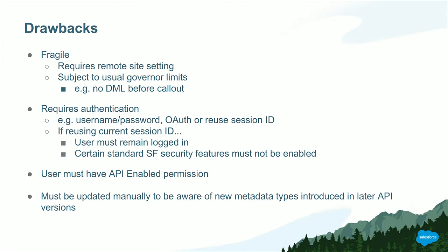For example, a user must remain logged in during any asynchronous processing. Some Salesforce features can also get in the way — one enforces that a session ID can only be used from the IP address that did the login. Since Apex runs on the server, it's a different IP address and won't work unless you disable those features. Users must be API-enabled, which requires giving them modify-all permissions. And if a new Salesforce release comes along, the code doesn't update automatically — you have to upgrade it manually.